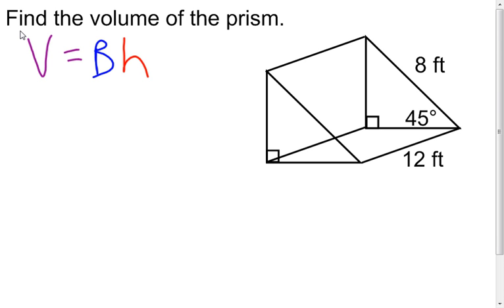Remember that height is the height of the prism. I look at this again and I know it's a triangular prism, so I'm going to need to know what is the area of that triangle. I know that the hypotenuse of this triangle is eight feet, and I see that it's 45 degrees here, which means it's going to be a 45-degree angle there because I have the right angle here.